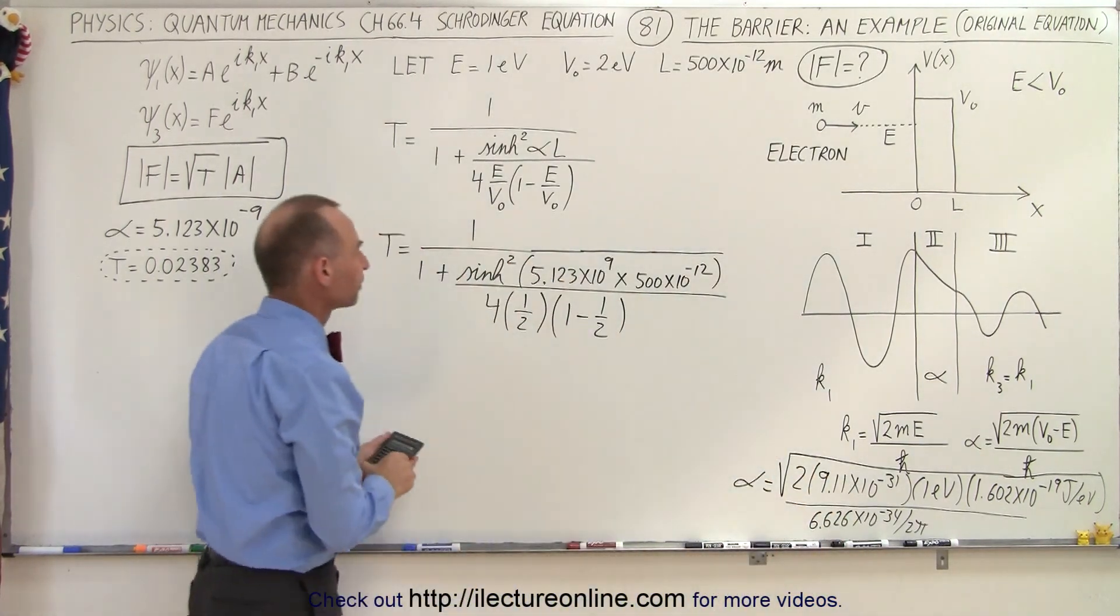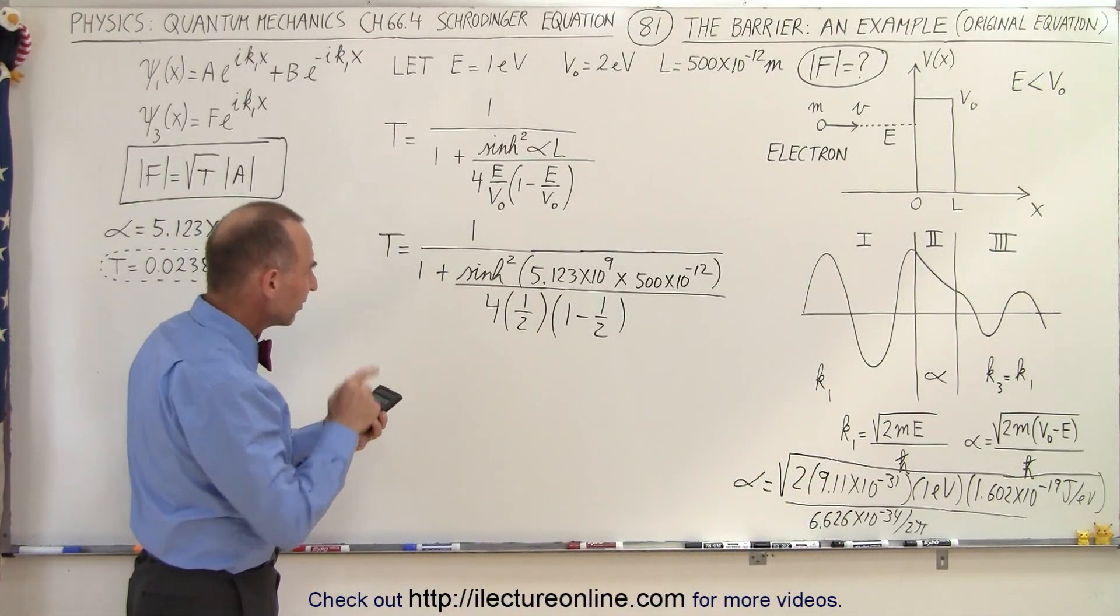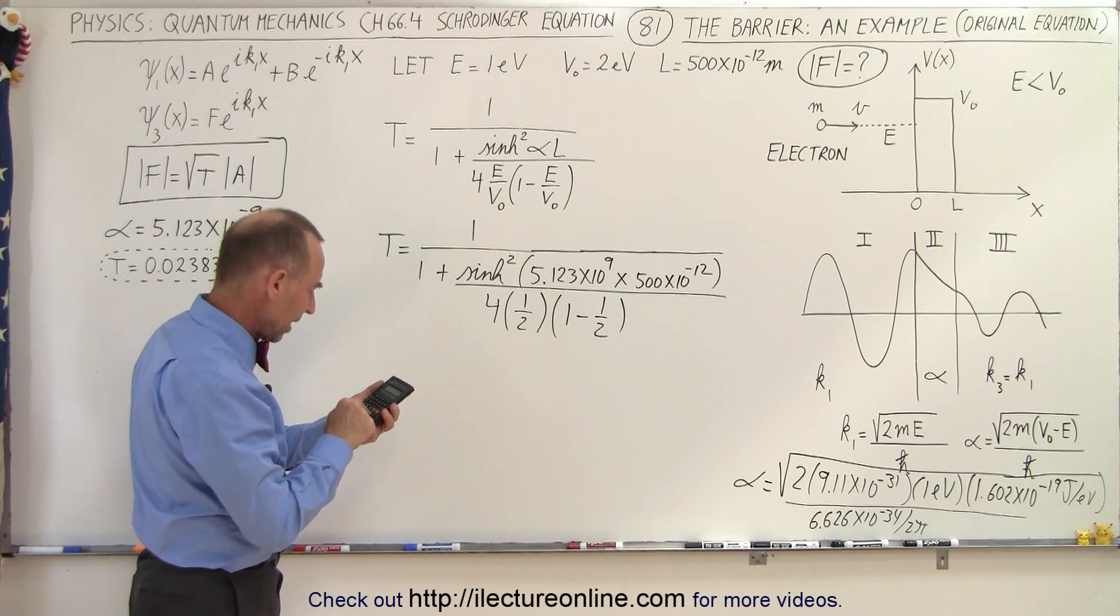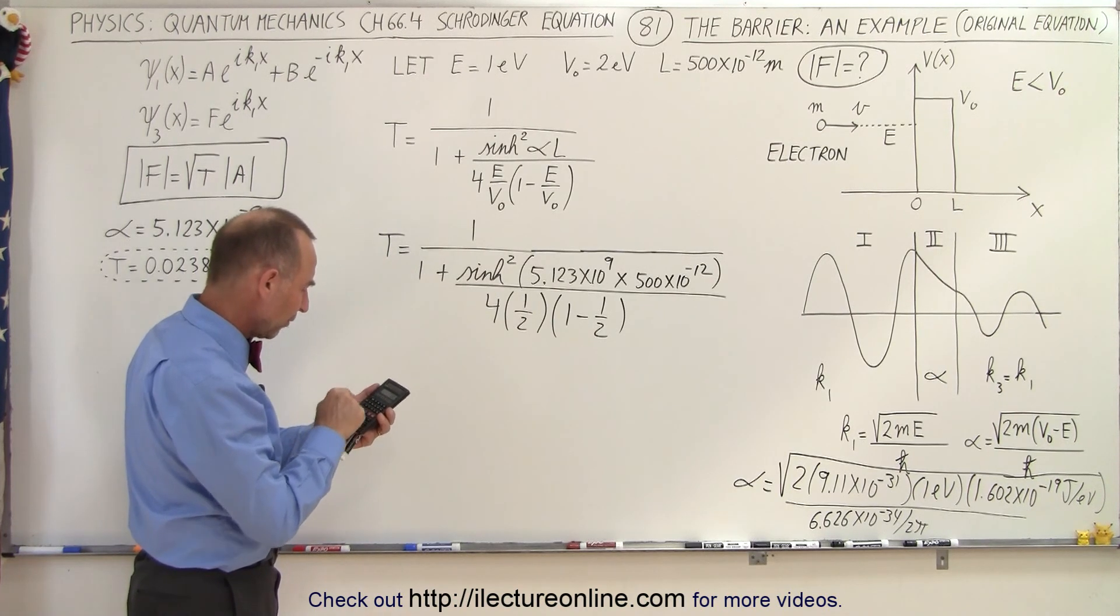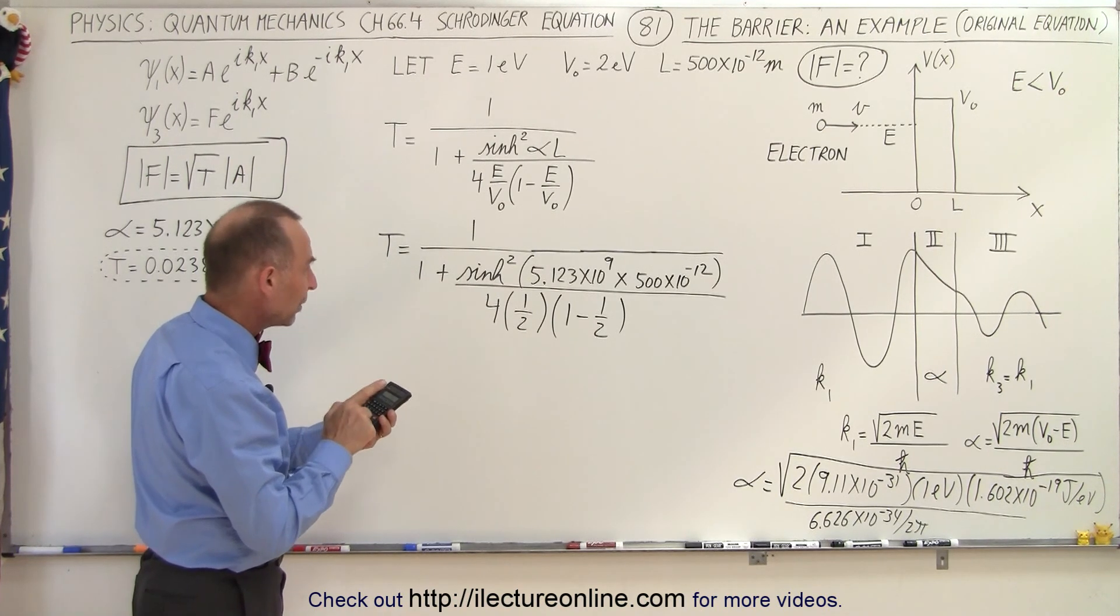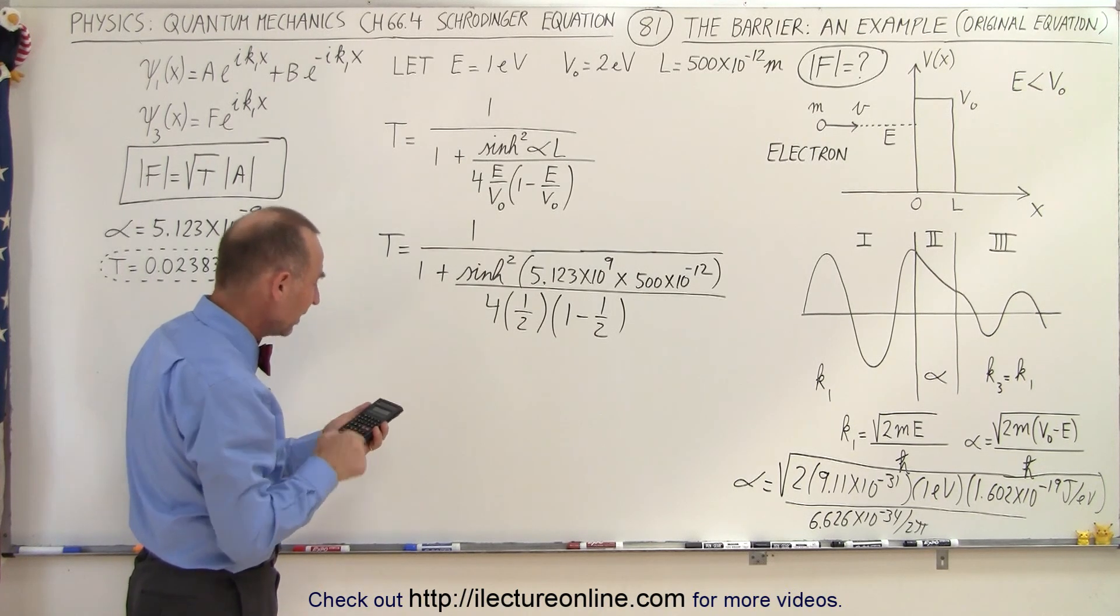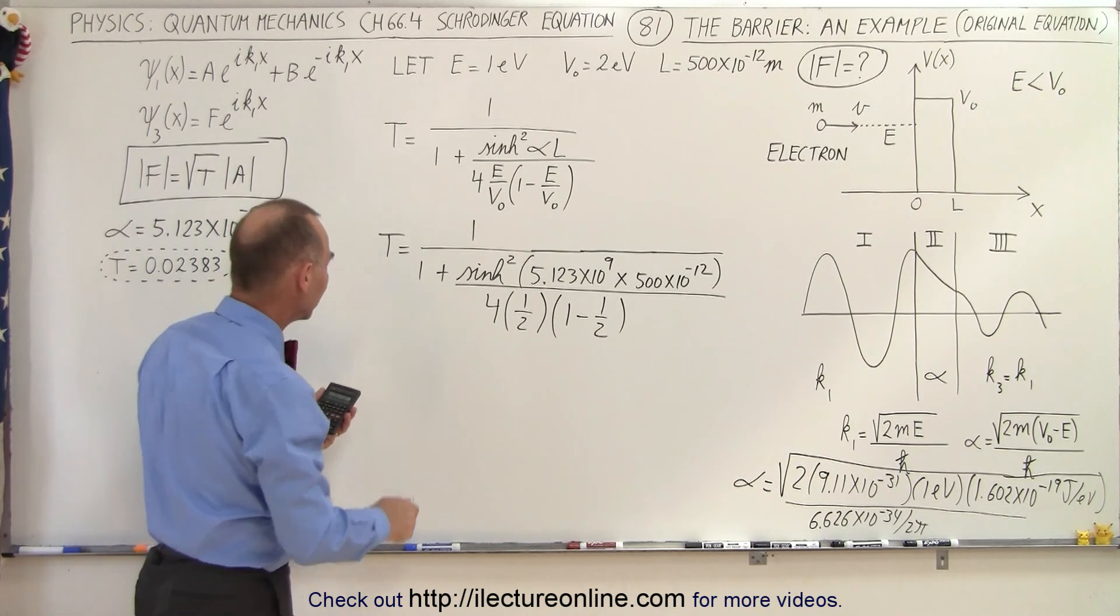We simply have to work this out, add one to that, and then take the inverse. So let's take 5.123 E9 times 500 E-12, and now we take the hyperbolic sine of that.